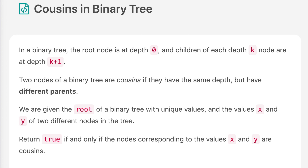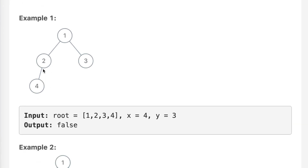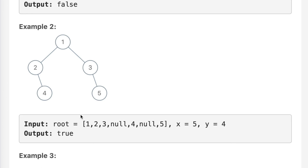We are given the root of a binary tree with unique values and the values x and y of two different nodes in the tree. Return true if and only if the nodes corresponding to x and y are cousins. In example one, x is 4 and y is 3. The depth of 3 is 2 and the depth of 4 is 3 — they are not at the same depth, so the answer is false. In example two, x is 4 and y is 5; the depths of 4 and 5 are the same and their parents are different, so 4 and 5 are cousins.